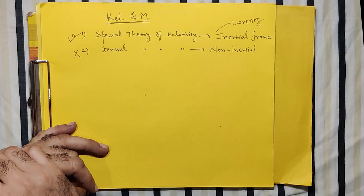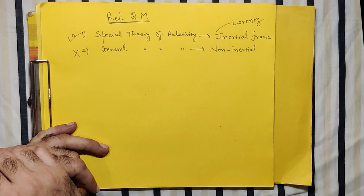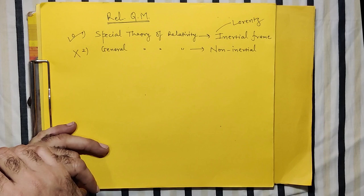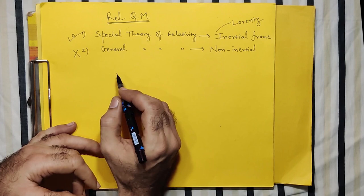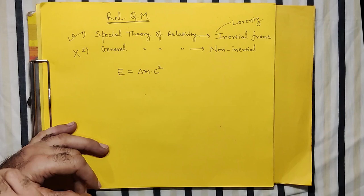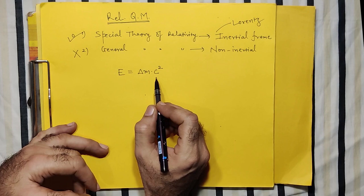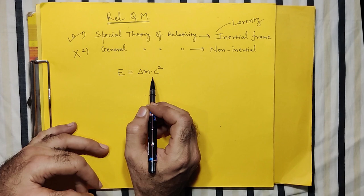Before we start, let us also realize where relativistic concepts need to be applied. There are two ways to understand this. Let us recall the very famous Einstein mass-energy relation: E equals delta mc squared. Here c is the speed of light in vacuum and m is the mass. This relation is very important in the case of relativistic quantum mechanics.